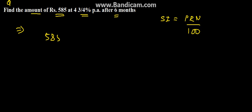Principal is 585 and rate is 4 3/4. It comes to 4 times 4 is 16 plus 3, that is 19. This comes to 19/4 and into 6 months, that is half the duration, and we need to divide this by 100.